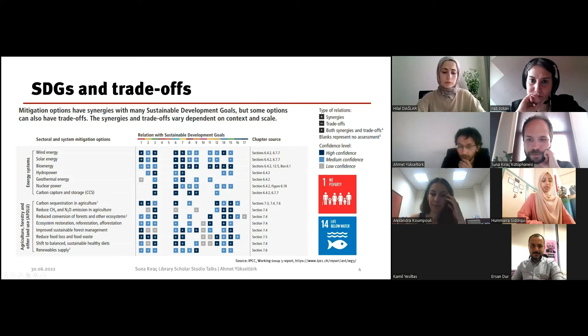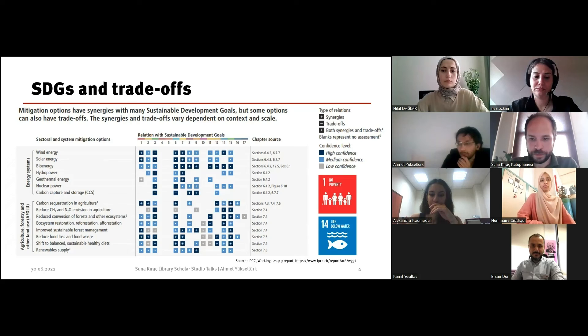These are the climate mitigation policies. To the right, you see 17 Sustainable Development Goals, and we have interaction between these criteria. If we take wind energy as a first mitigation option, we see that Sustainable Goal number one, no poverty, is marked with a plus. This means if we use wind energy, we will get less poverty.